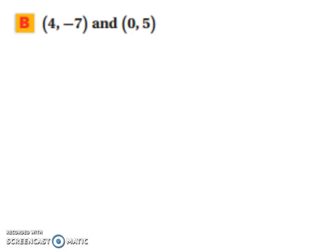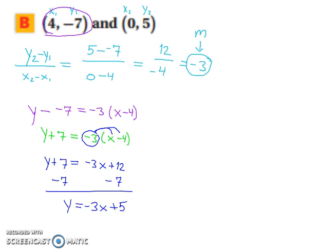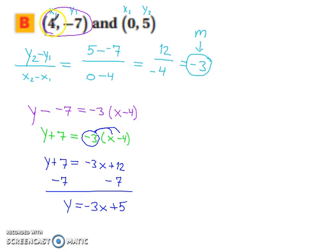Try this next one on your own. When you return, the answer will be revealed. Step 1: use the slope formula, y₂ minus y₁ over x₂ minus x₁, giving a slope of negative 3. Picking the first coordinate: y minus negative 7 equals negative 3 times x minus 4. Distributing negative 3 and subtracting 7 from both sides leaves y equals negative 3x plus 5.